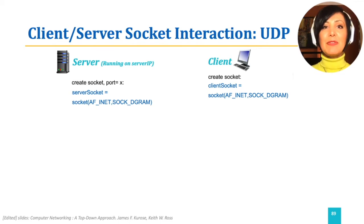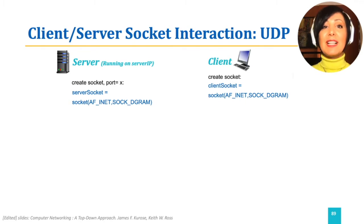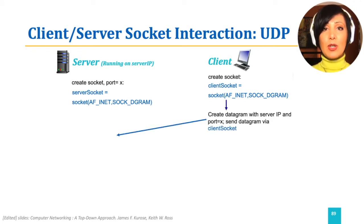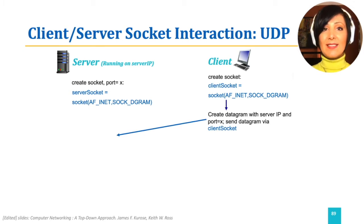The flow of communication between client and server in this simple example program would be as follows. Each of the client and server programs create their own sockets. The client program creates a datagram with the server IP and port number and sends the datagram using the client socket. The server program then receives the incoming packet on its socket.